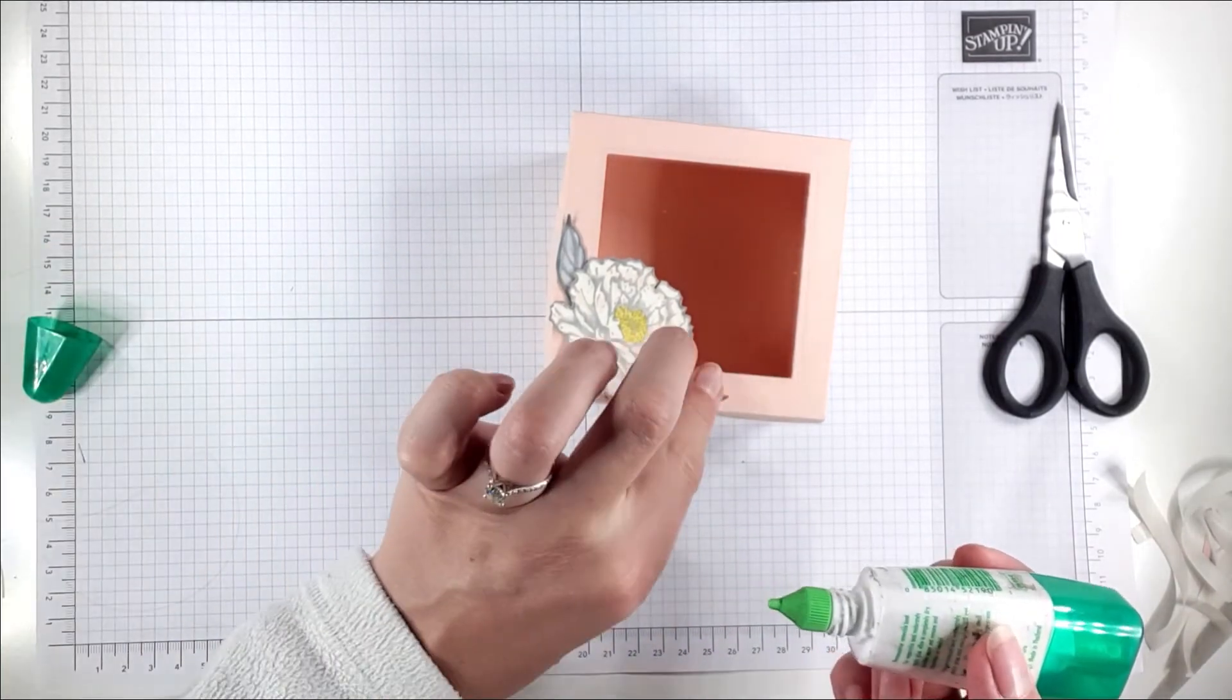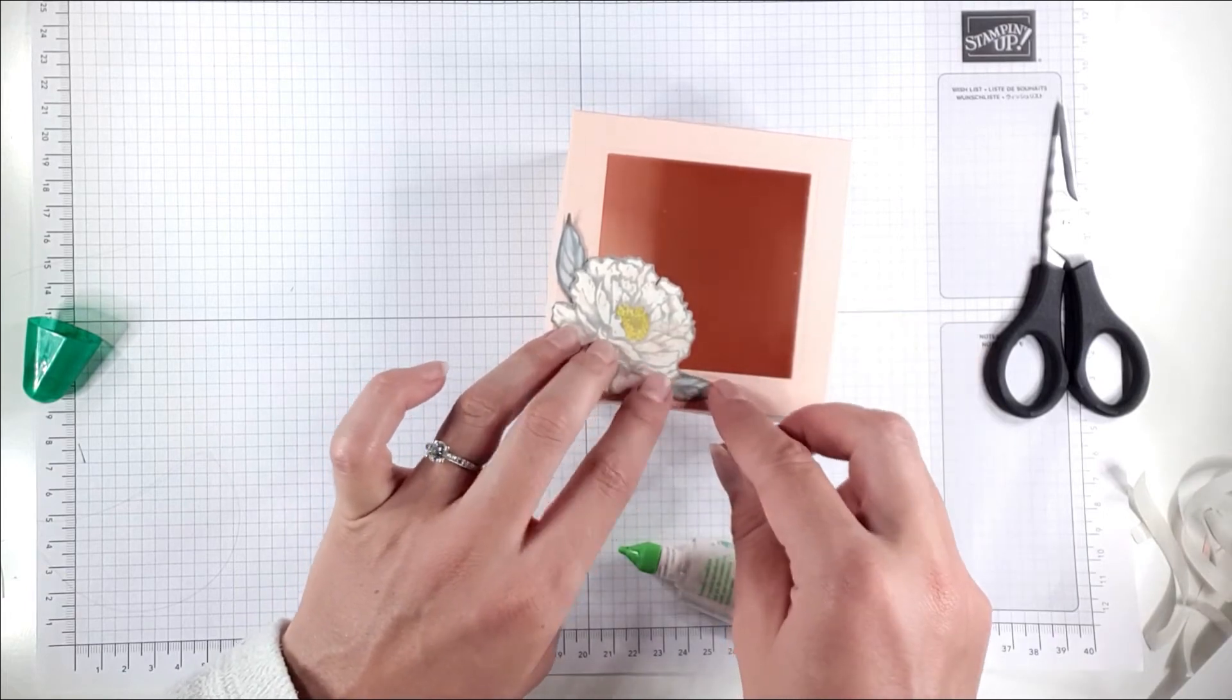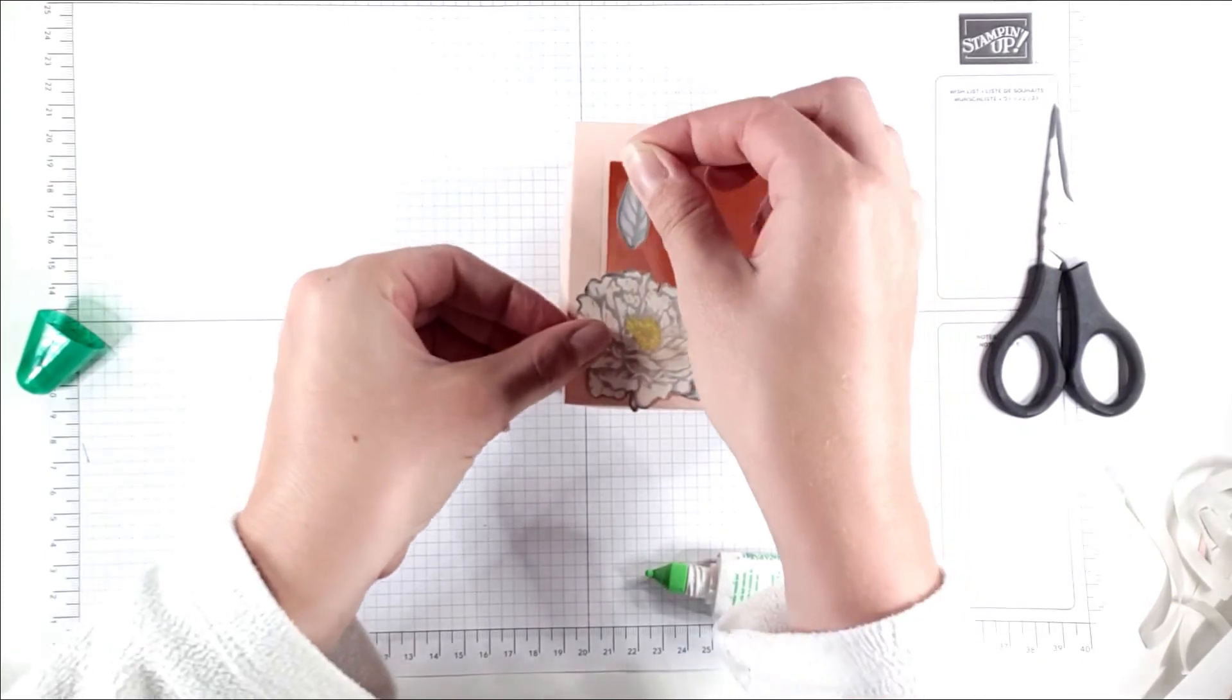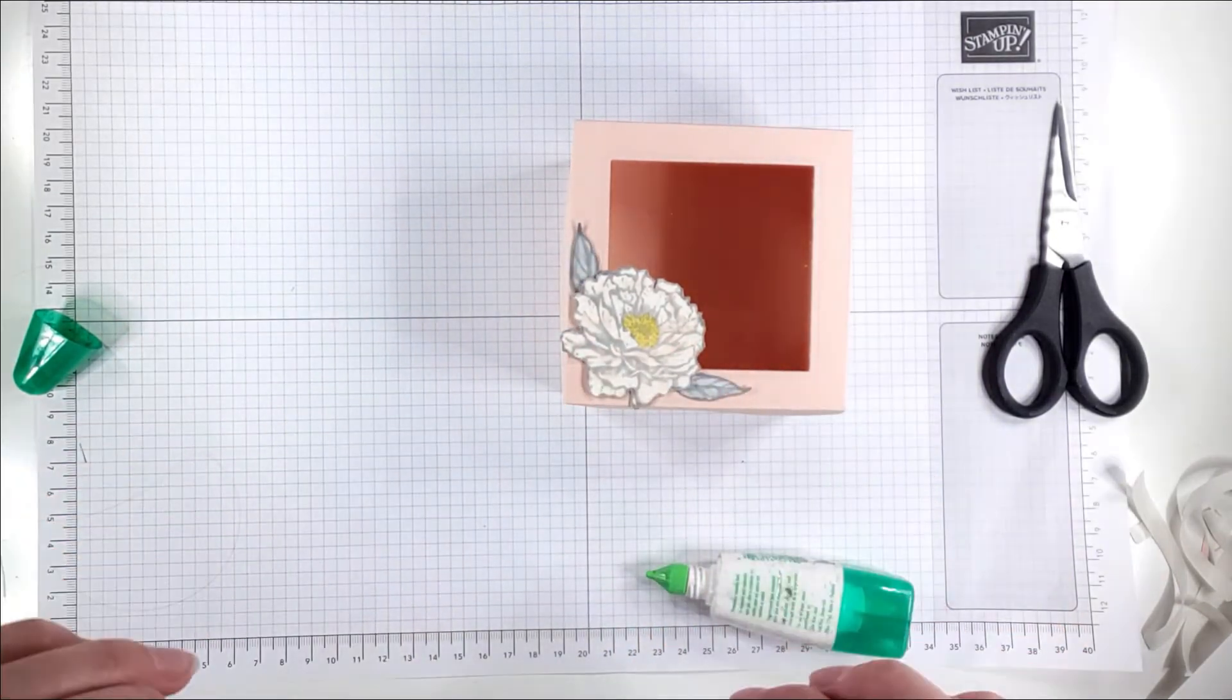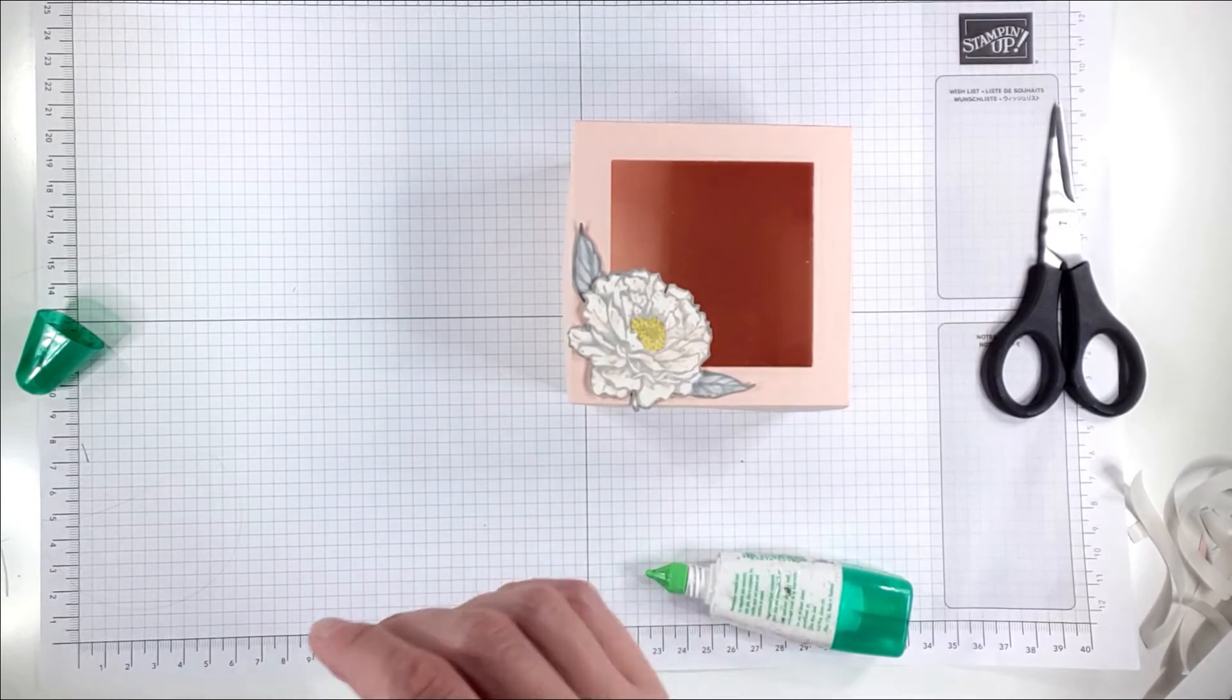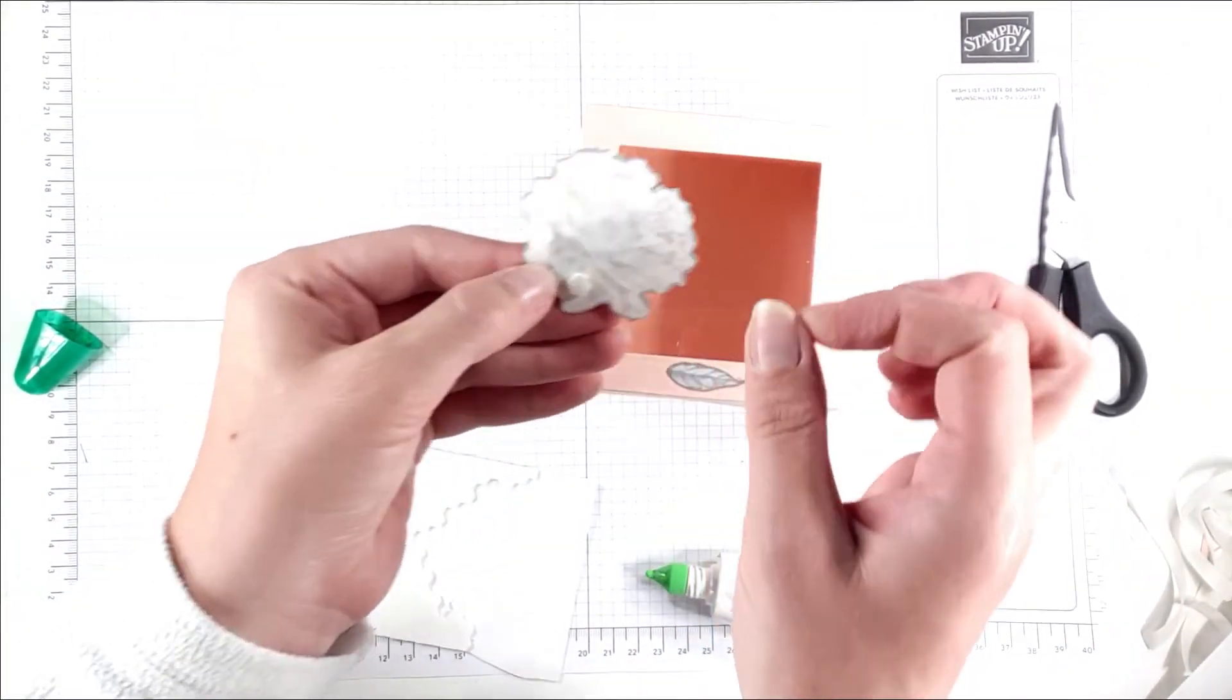Then I'm just going to glue the leaves in place. Then I want to pop up the flower but I don't want to be able to see the dimensionals inside the box, so I'm just going to be very careful about laying them around the outside. I've got the mini dimensionals today. I'm just going to pop them around just this little bit of flower.